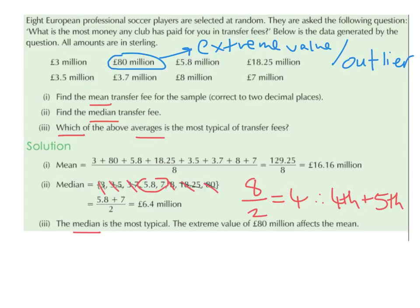This extreme value of 80 million affects the mean by pulling it upward — we got a mean of 16.16 million, and only one number in the list is anywhere near that: 18.25 million. So 16.16 million is not a good average to use. The median of 6.4 million is much better, since 3, 3.5, 3.7, 5.8, 7, and 8 are all fairly close to 6.4. We also can't use the mode because there is no repeated number.